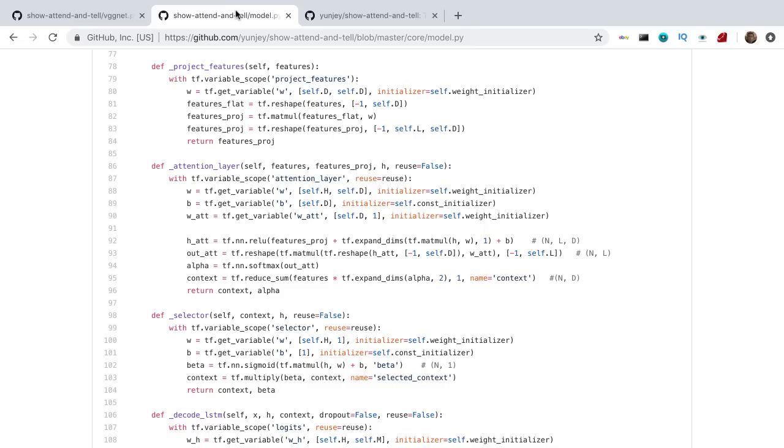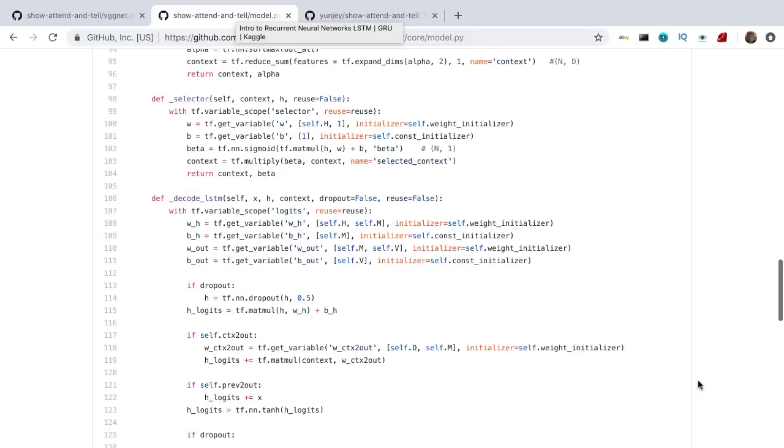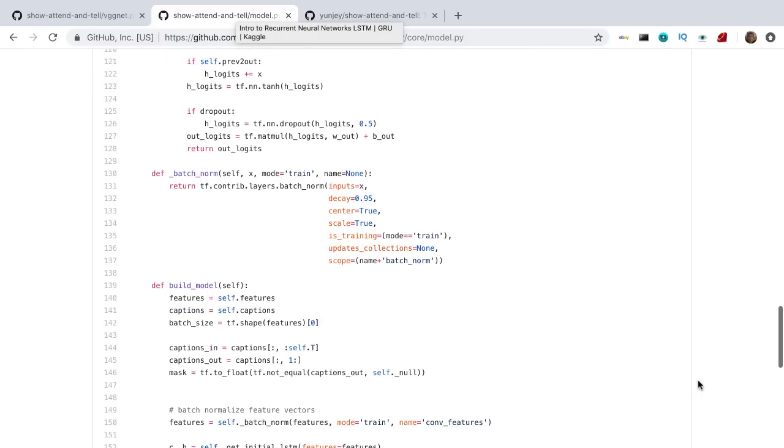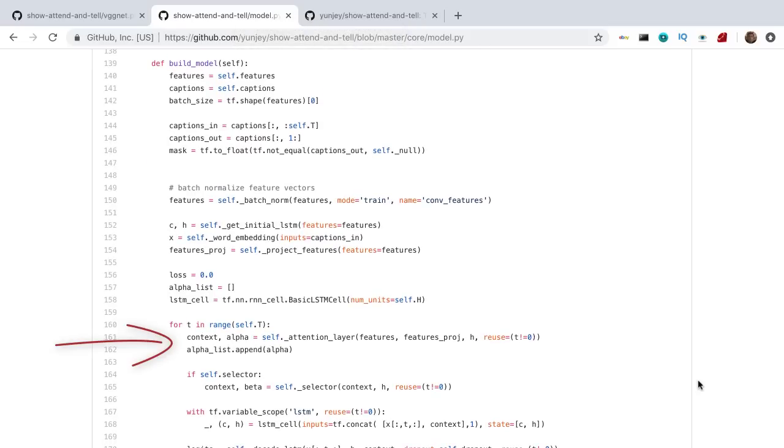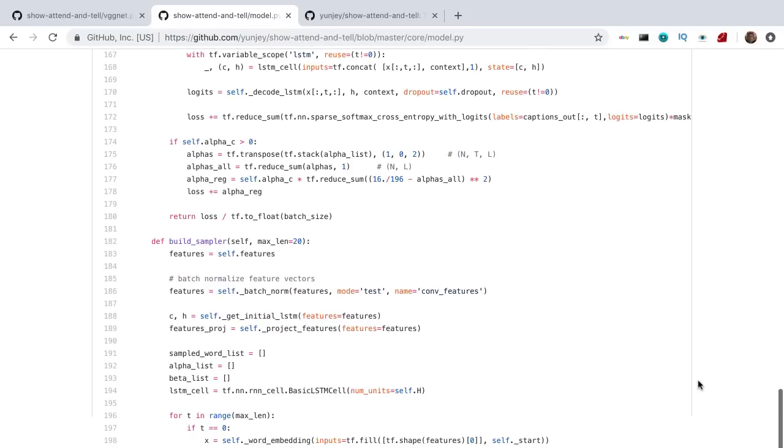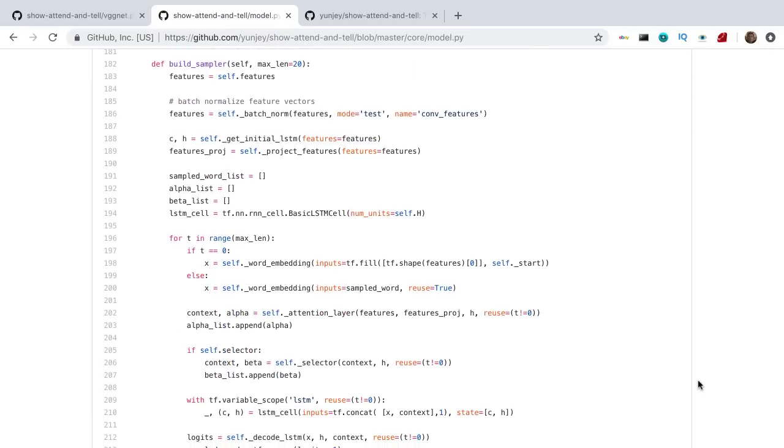The attend and tell part is a part of our caption generator class. So it is here that we build the LSTM model. This is done while considering the word embedding as the input, and for every word, getting the set of alphas and context vector. This method, buildSampler, will allow us to generate the caption itself.